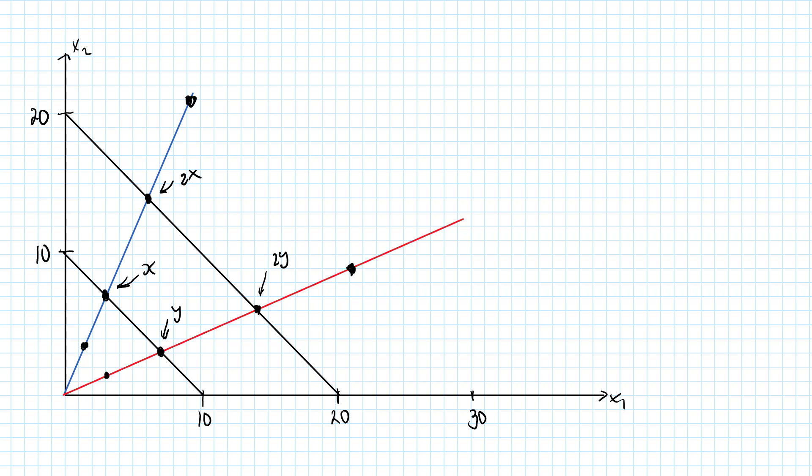That's simple geometry. The slope of a straight line between x and y must be equal to the slope of the straight line between 2x and 2y.